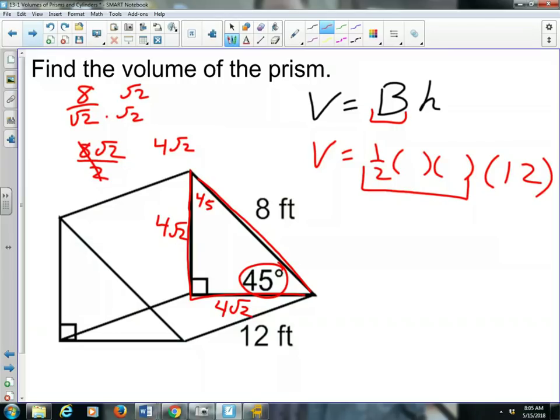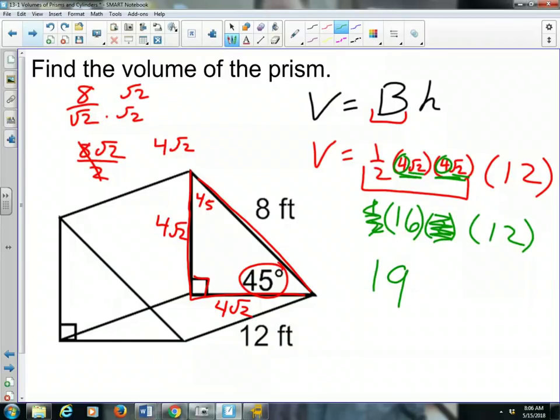Okay, so the area of the base is one half base times height. They're both four root two. The base and the height are always perpendicular. Okay, now we can simplify the area of the base and then multiply by the height of 12. So I would say what's four root two times four root two? Four times four is 16 and root two times root two is two. So it's one half, 16 times two is the area of the base multiplied by the height which is 12. Well, one half times two is just one, so it's 16 times 12. And 16 times 12 is 192 cubic feet or feet cubed. There's our first one.